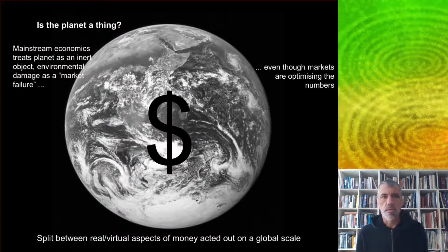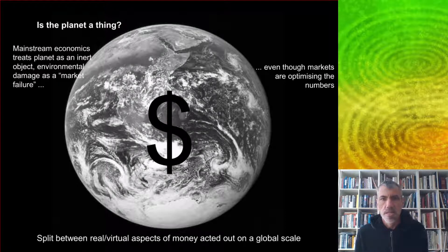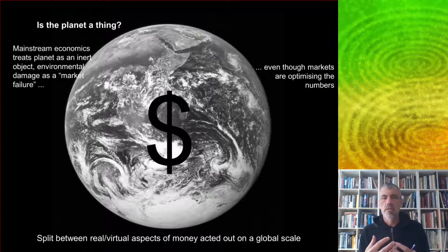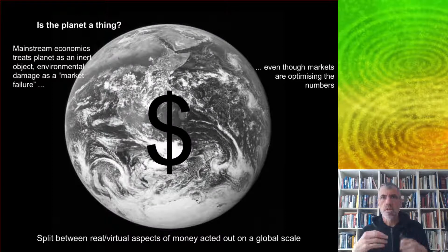This real–virtual split in money is perhaps most evident in our attitude towards the environment. Mainstream economics tends to treat the planet as an inert object; environmental damage is considered a market failure, even though markets are optimizing the numbers by growing as fast as they can. One of the main contributions of the quantum approach is to draw our attention to this dual real–virtual nature of money, and to align our economy — and our use of energy — with the thermodynamic realities of the planet.